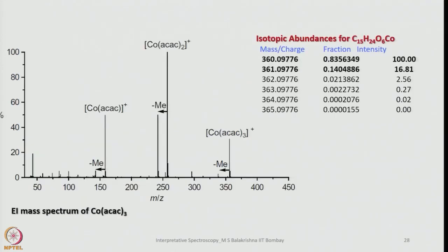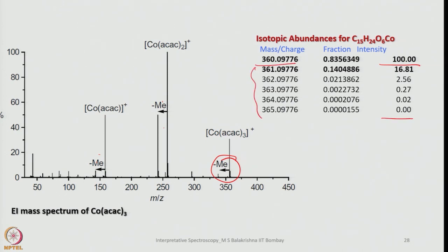For cobalt tris-acetate, the base peak is present, and then with loss of a methyl group it shifts, again losing another methyl group. The 100% peak and the corresponding fragments are shown here.